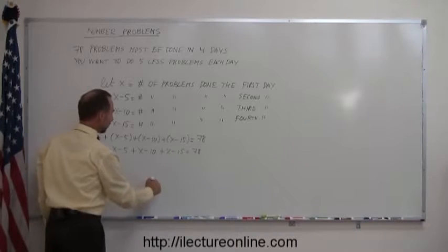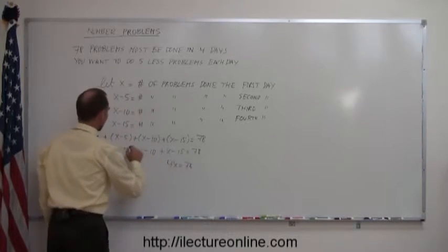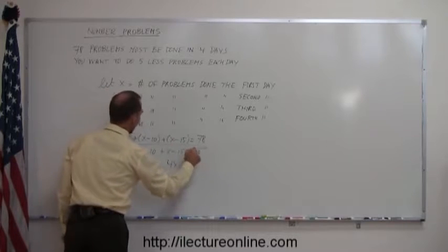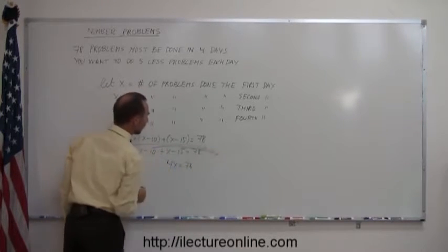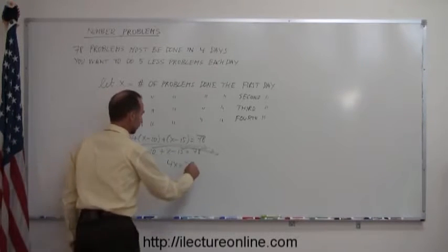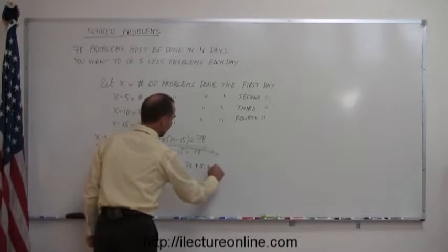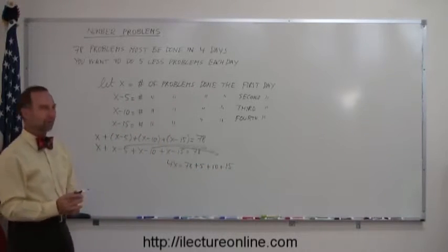We have four x's on the left side, so 4x equals 78. And then we're going to move the minus 5, the minus 10, and the minus 15 to the right side. And of course, if we move things across equal sign, the sign changes, so this becomes plus 5 plus 10 plus 15. Then we add all the numbers together.